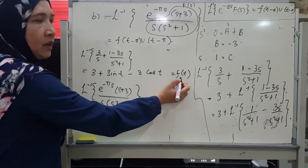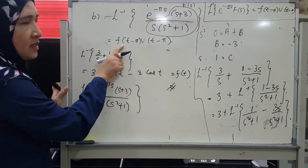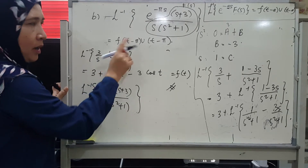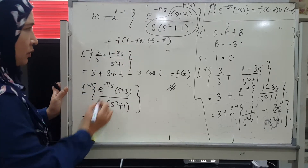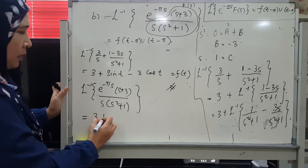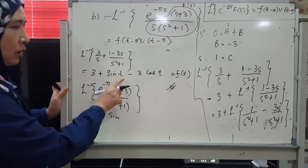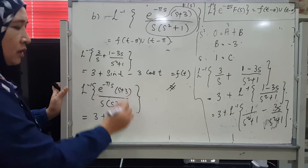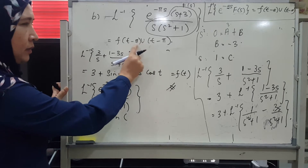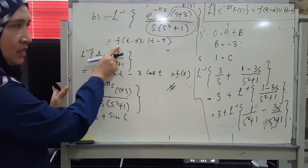So now we have found our f(t). The answer is f(t) minus pi. So now we have 3 last sign. So now all the t's will be substituted by t minus pi, because we want this.